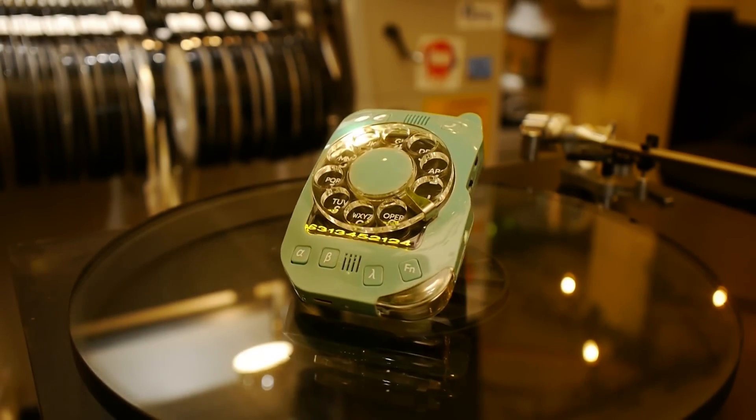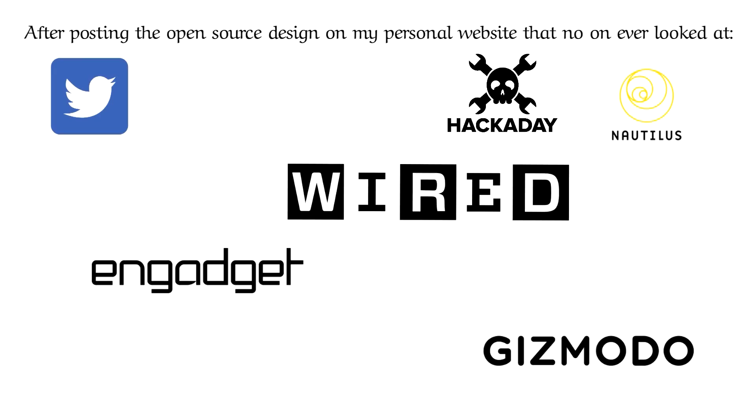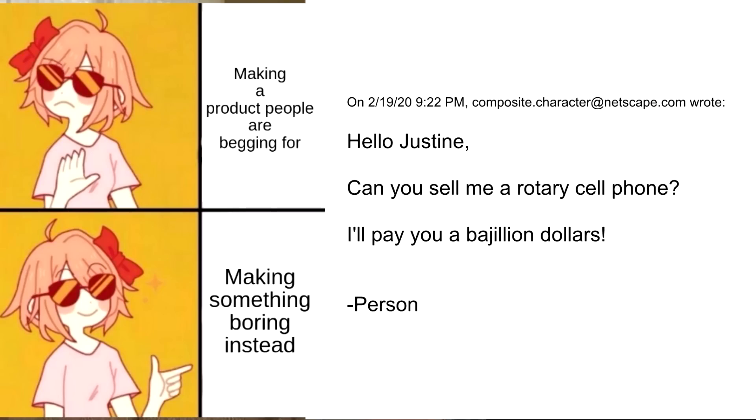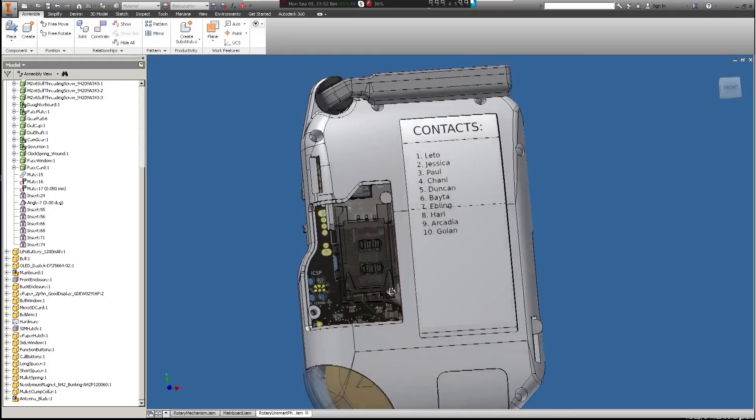Justine Hoppt has an update on her rotary cell phone project from a few years ago. After fielding dozens and dozens of requests to sell or produce a kit for the device, she's taken on the task of redesigning the project so she can turn it into just that.